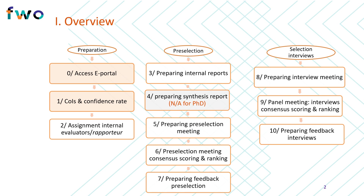This step, which is an important part of the preparation phase of the evaluation procedure, serves to inform us of any potential conflicts of interest you may have with the applications submitted to your panel. It is of course crucial that FWO is aware of any such COIs. Simultaneously, we also ask you to indicate your suitability to act as a reviewer for each of the applications submitted to the panel by indicating your confidence rate for each individual application. This information will be paramount for the chairs of the panel to distribute the appropriate applications for review to you.